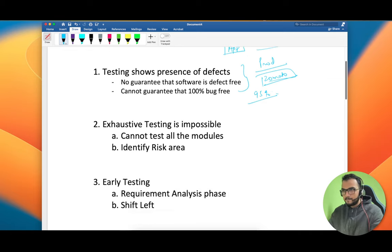You can say this product is 95% tested, but you cannot ever say that it's 100% tested. The second principle is related to the first one: exhaustive testing is impossible.